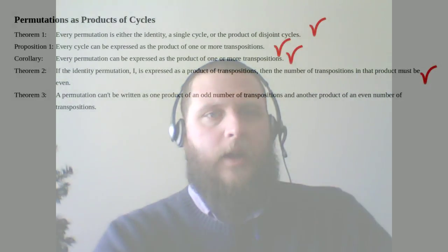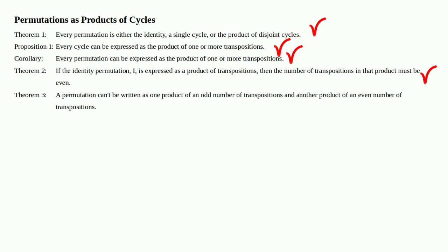Okay, the last time we made a video, we proved the theorem, theorem number two, which states that if the identity permutation i is expressed as a product of transpositions, then the number of transpositions in that product must be even.